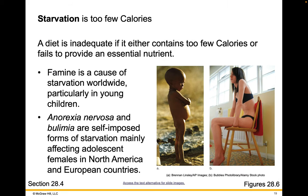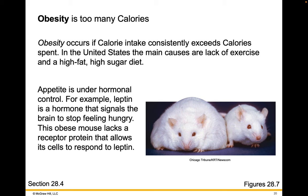Starvation occurs when a person or an animal consumes too few calories. If a diet is inadequate, it either contains too few calories or fails to provide an essential nutrient. Famine is a cause of starvation worldwide, particularly in young children. Anorexia nervosa and bulimia are self-imposed forms of starvation, mainly affecting adolescent females in North America and European countries. Obesity occurs if calorie intake consistently exceeds calories spent. In the United States, the main causes are a lack of exercise and a high-fat, high-sugar diet. Appetite is under hormonal control — for example, leptin is a hormone that signals to the brain to stop feeling hungry. This obese mouse lacks a receptor protein that allows cells to respond to leptin.